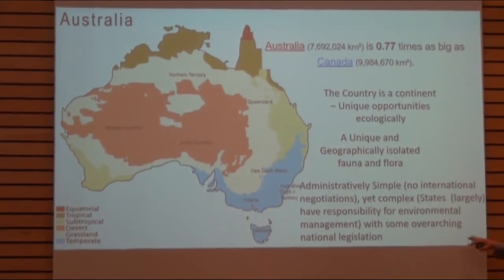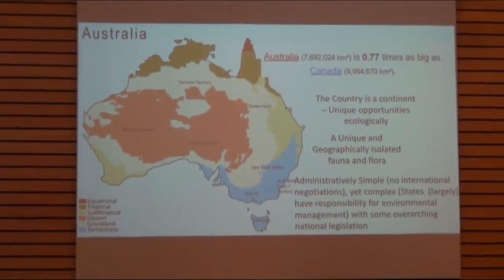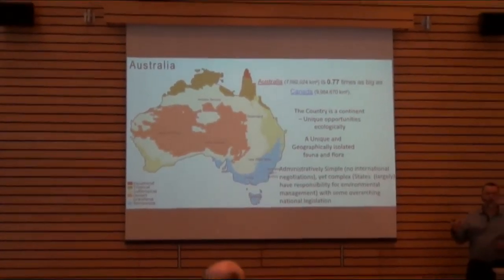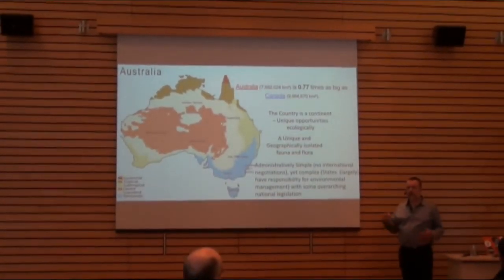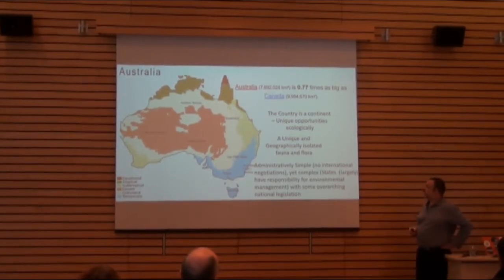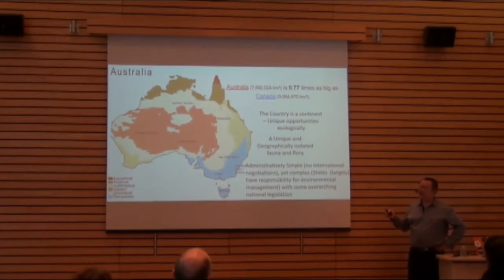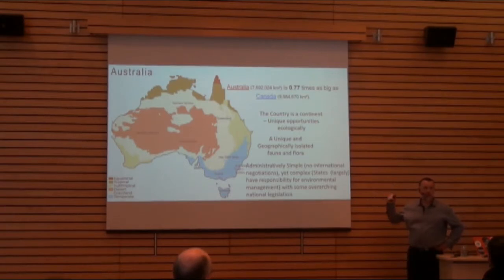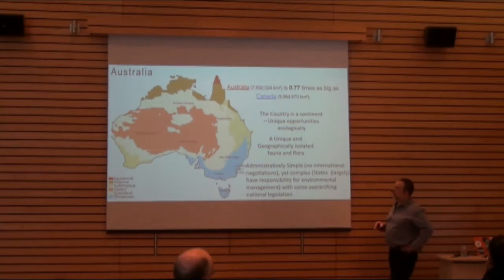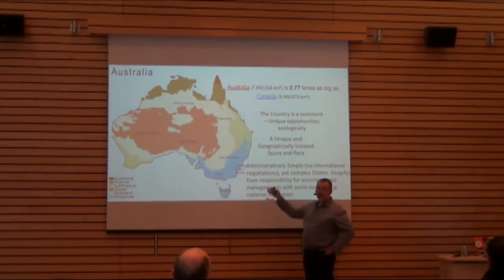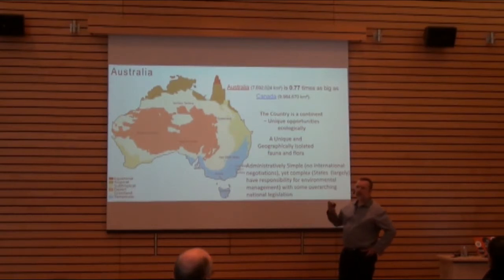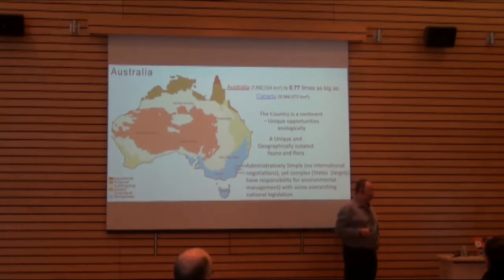Australia is administratively simple in that there are no land boundaries with other countries and no international environmental negotiations. But it's quite complex because, like you have provinces, we've got states, and environmental management and monitoring has traditionally been a state responsibility. This creates challenges where things happen differently — different information is collected, different mapping occurs, or things are defined differently across different state boundaries.